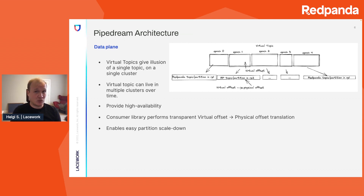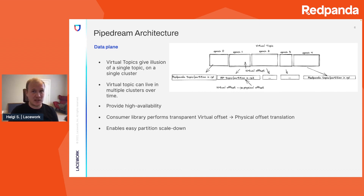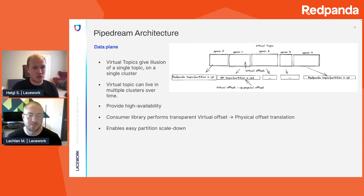A secondary benefit to virtual topics is that it allows us to perform partition scale down. A new epoch does not have to have the same number of partitions as the previous epoch, and this allows us to more aggressively scale up a topic to meet temporary increases in demand and just as easily scale back down if volume decreases. Finally, this abstraction has proved immensely helpful in our operational agility, which we'll hear about next from Lachlan, who's going to talk about our Red Panda operations and infrastructure.